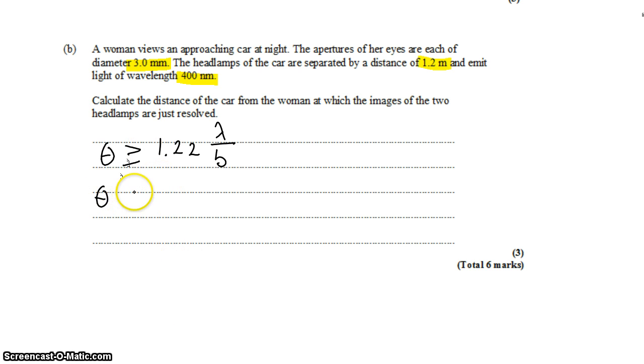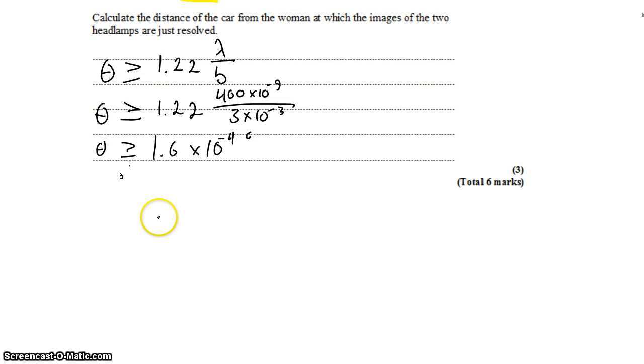This means that we can solve for theta. It has to be at least 400 nanometers divided by 3 millimeters. And that works out to 1.6 times 10 to the negative 4 radians. Well, that gets us part of the way there.